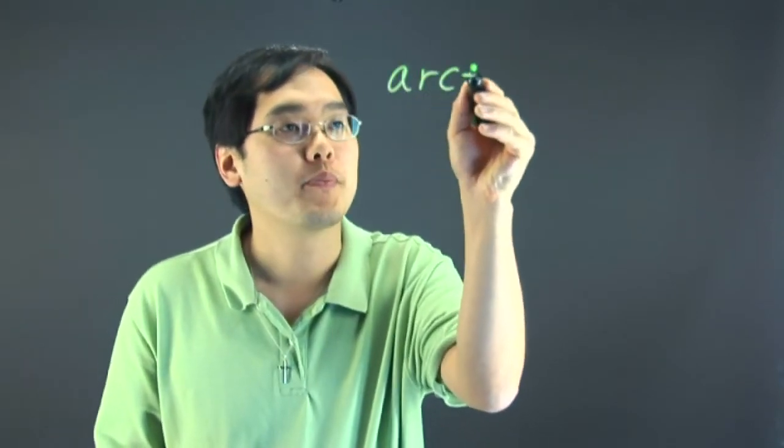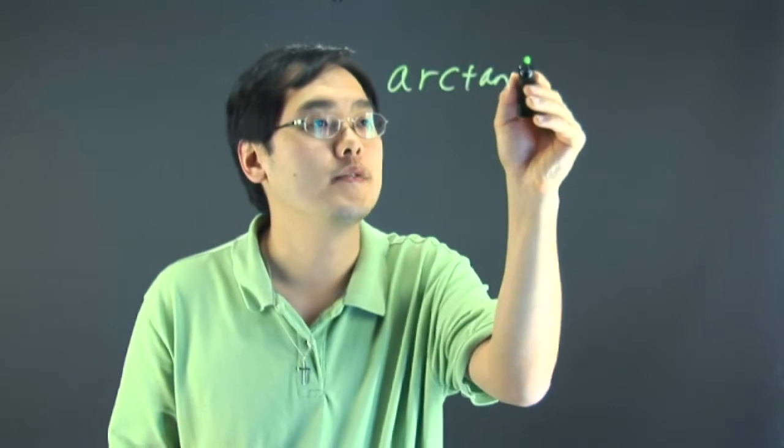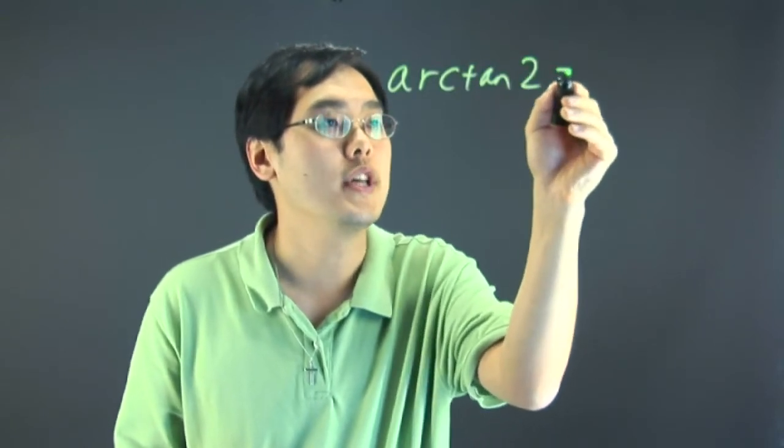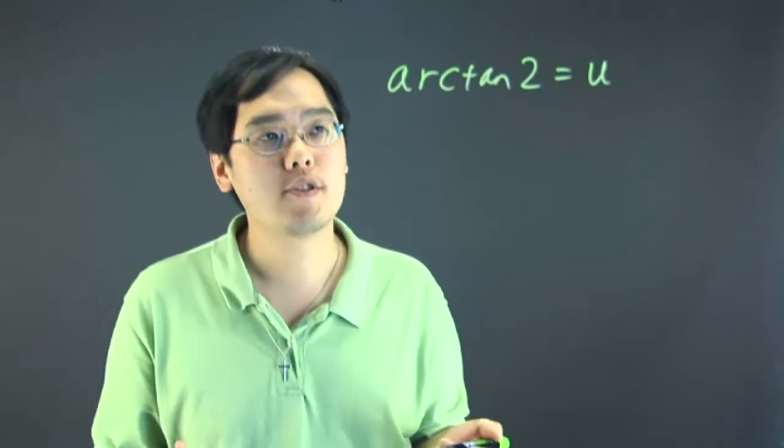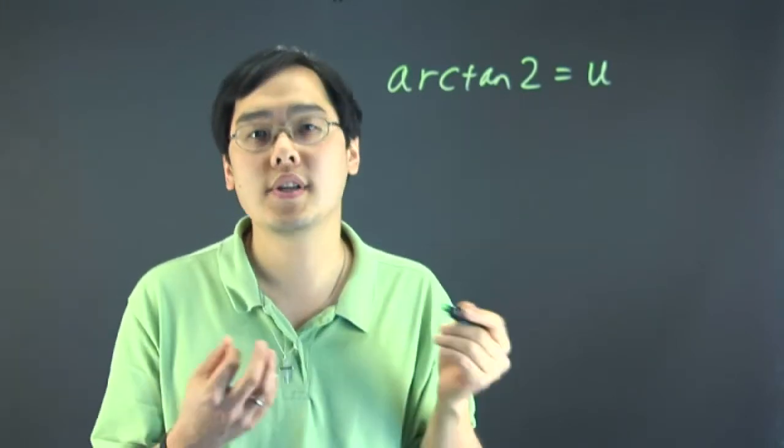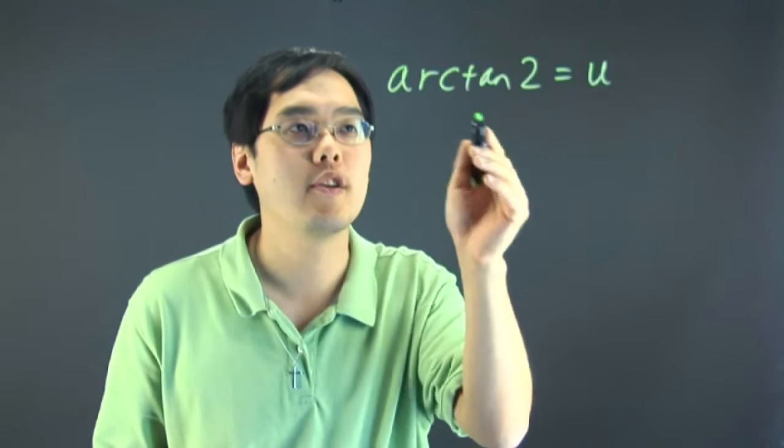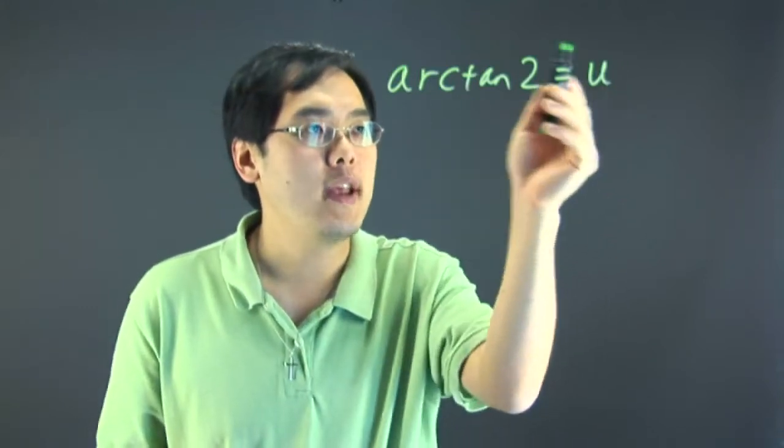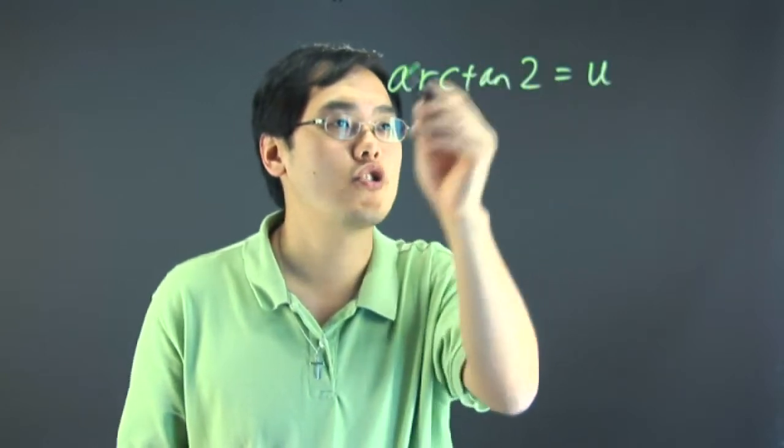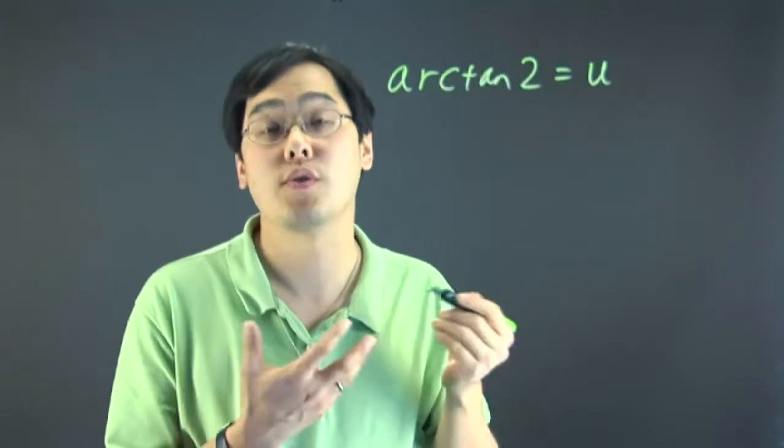If you have, for example, arctan(2) = u, this gives you some clues as to what you're looking for. More often than not, this involves the use of right triangles. Here's how to transition from this trigonometry equation to an algebraic expression.